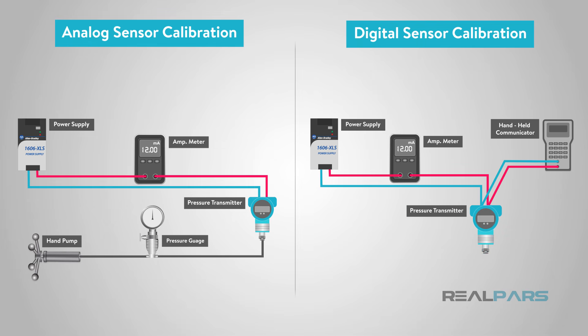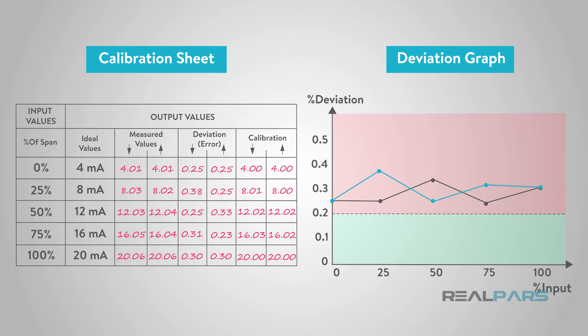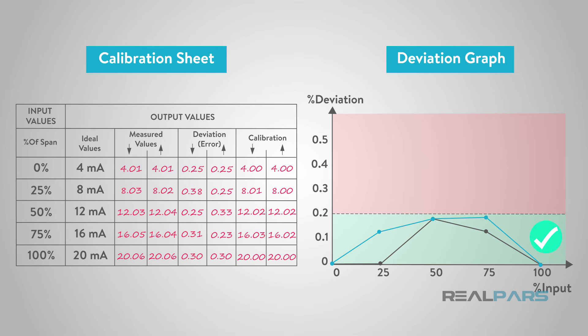With a digital transmitter, we can adjust the incoming sensor signal by adjusting the analog to digital converter output, which is called sensor trim, and/or the input to the digital to analog converter in the output circuit, which is called 4 to 20 milliamps trim, or output trim. After calibration, the errors are graphed once again. As with the as-found values, there is some degree of hysteresis. However, the maximum deviation has been reduced from 0.38% to 0.18%, well within the tolerance of 0.2%.